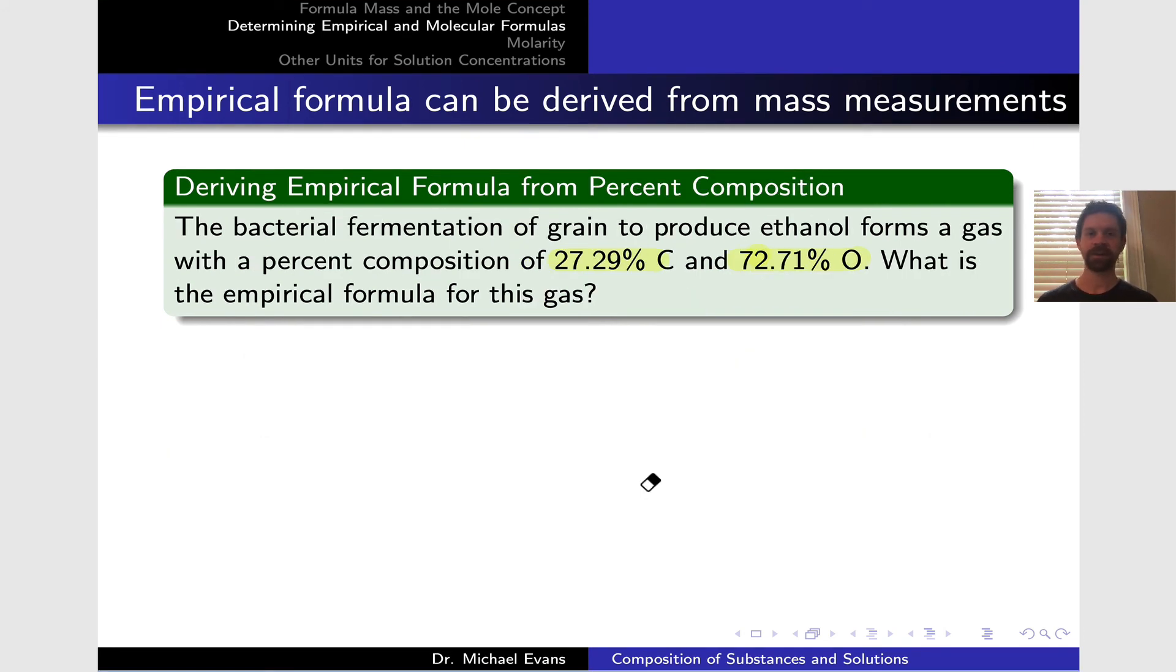Using percent composition is very similar to what we just did. We'll be assuming a hundred gram basis at the outset to convert those percentages into masses. Let's imagine a gas produced in bacterial fermentation of grain with 27.29% carbon and 72.71% oxygen by mass. What's the empirical formula? First, assume a basis of 100 grams. That means 100 grams of gas will have 27.29 grams of carbon and 72.71 grams of oxygen. We convert each into moles using the molar mass. 27.29 grams of carbon divided by 12.01 grams per mole gives 2.27 moles of carbon.